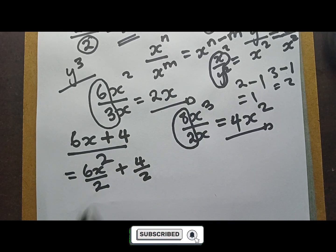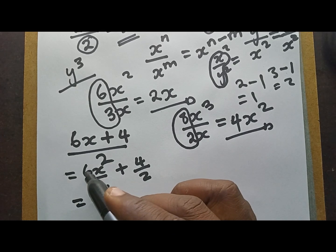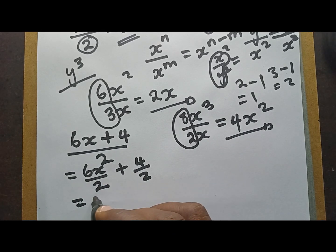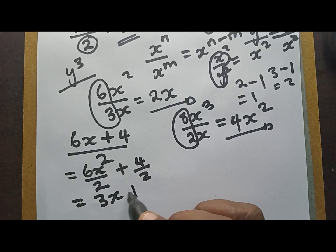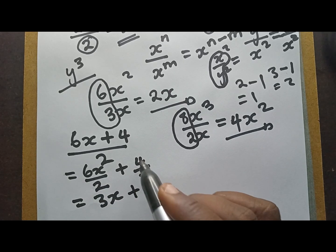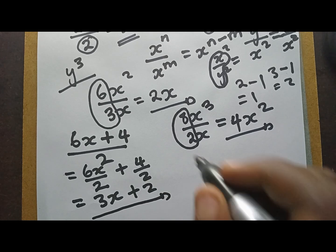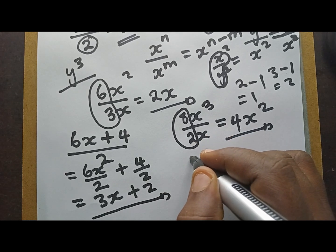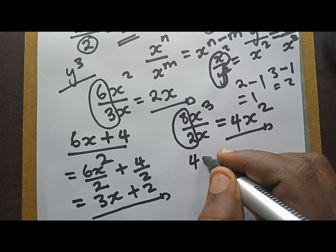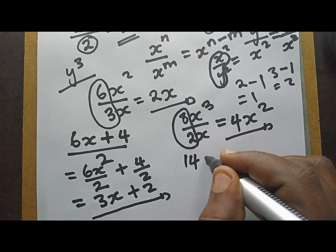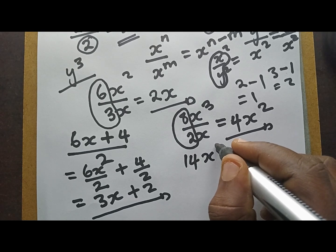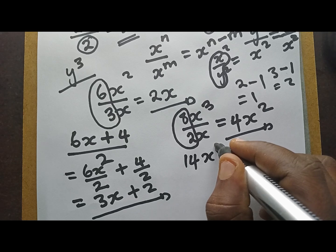So you write 6x divided by 2 plus 4 divided by 2. You start with the numbers first: 6 divided by 2 is going to be 3x, and 4 divided by 2 is going to be 2. So your answer is 3x plus 2.